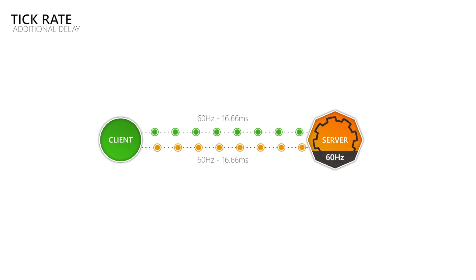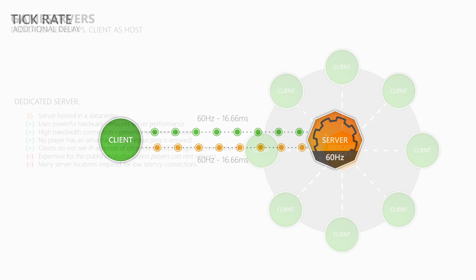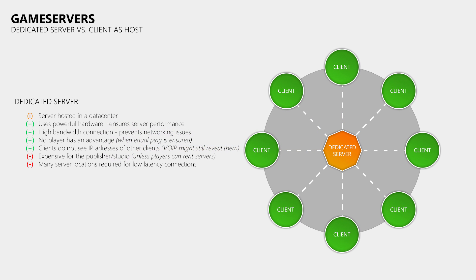Now, what kind of options do developers have when it comes to providing servers? One solution is that you pay hosters to set up dedicated servers for your games in their data centers, to which the players then connect. This means that your game server is running on powerful hardware, the data center provides enough bandwidth to handle all the players that connect to it, and the players are not able to see each other's IP addresses — at least as long as the game does not use a bad peer-to-peer voice over IP solution. Also, if the developers ensure that all players have more or less the same ping to the game server, then you can avoid that some players have an unfair advantage.